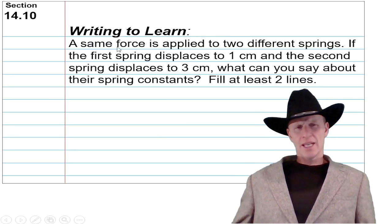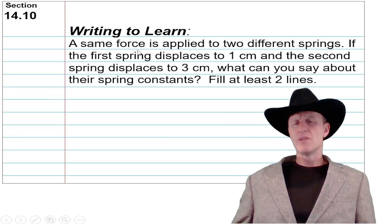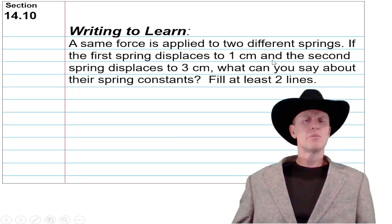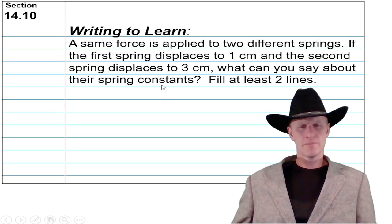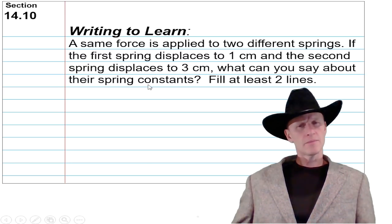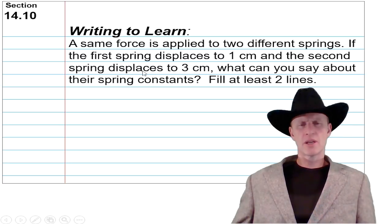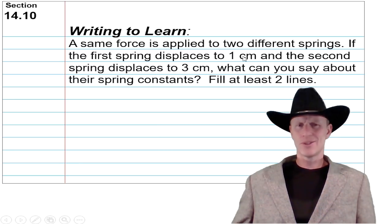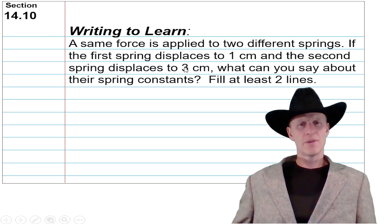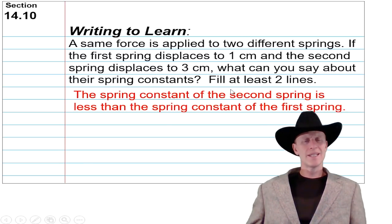So let's say the same force is applied to two different springs. If the first spring displaces to one centimeter and the second spring displaces to three, what can you say about the spring constant? Well, remember that these spring constants are characteristics of the spring that tell you how hard it is to stretch a spring. So if one only went one, that means it's a little stiffer. If one went three with the same weight, then it's not as stiff. So the one that didn't stretch as much has a higher spring constant.